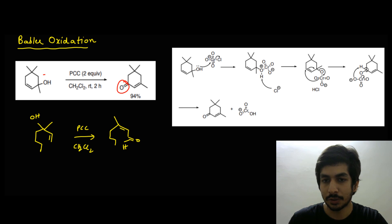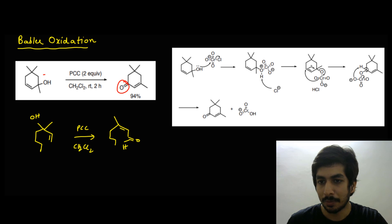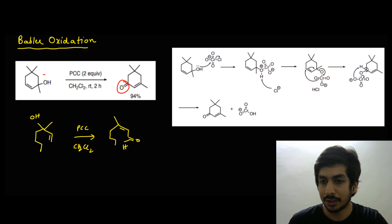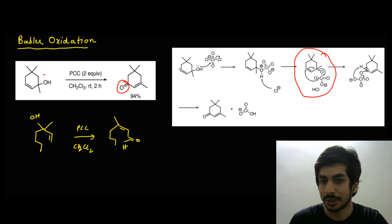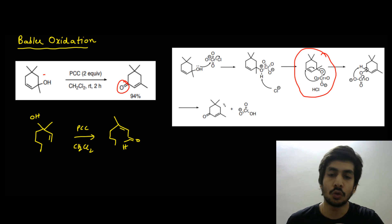The mechanism of Babler oxidation: the lone pair of the oxygen attacks the chromium, and the chlorine is kicked off, forming an intermediate. The chloride ion then abstracts a hydrogen. Next, the double bond migrates — this C=C shifts — and the carbon-oxygen bond breaks as oxygen attacks the new carbon. This gives an intermediate where the double bond has shifted. Finally, a hydride elimination step occurs: H is abstracted, the C-H bond migrates, the oxygen-chromium bond cleaves, and the ketone product is formed.